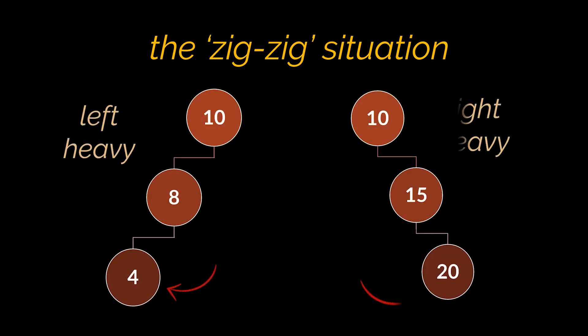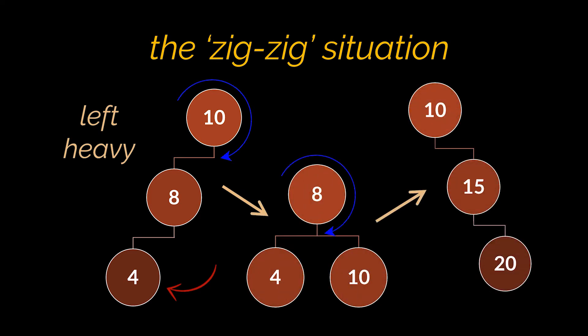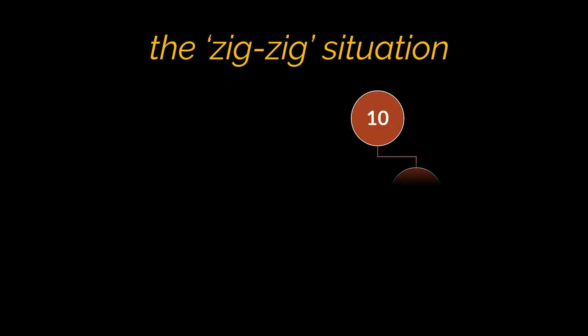In splay trees we don't actually care if nodes are clustered to the left or right side — we are not trying to balance the tree, we just care that the selected node is placed at the root. That is why these cases are grouped under the same situation. If the node we want is located heavily to the left, we need two right rotations: first on its grandparent, then on its parent. In the example, to bring node 4 to the top, we execute a right rotation on element 10 followed by another right rotation on node 8.